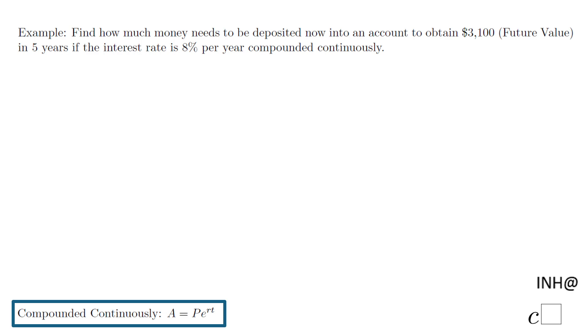in five years if the interest rate is 8% per year compounded continuously. Down here you see the formula we use for compounded continuously. A equals P times E to the power of RT. So let's see what this means. A means how much money you have at the end of the period. So in our case, A is the future value.